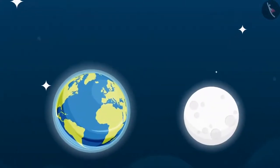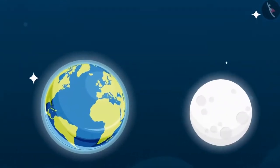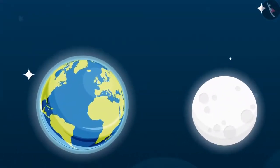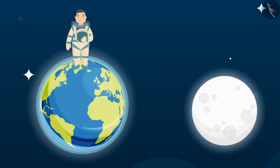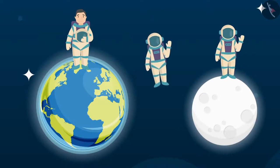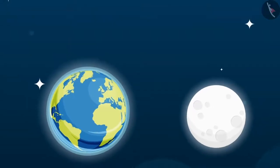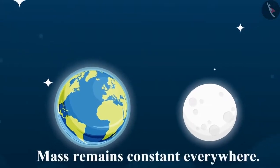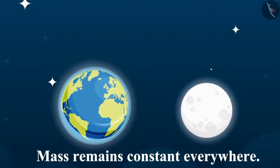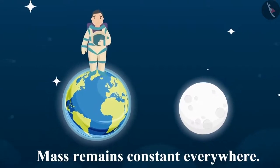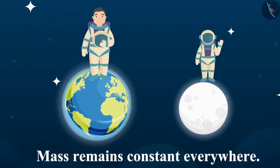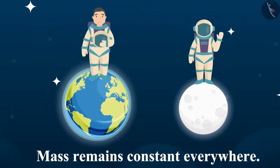The mass of an object remains the same everywhere. It doesn't matter whether the object is on the Earth, the Moon, or even in outer space. Therefore, we can see that the mass of an object remains constant and does not vary from place to place.